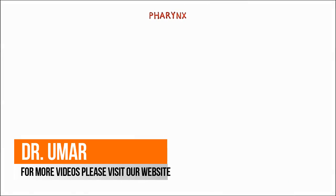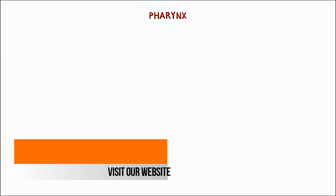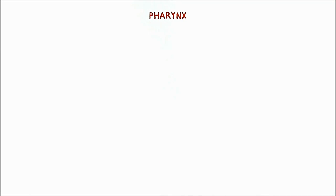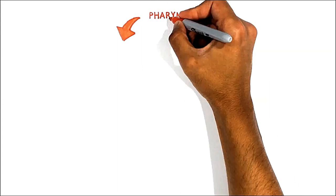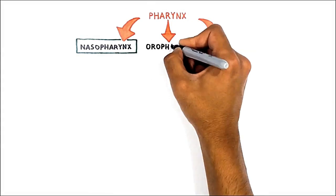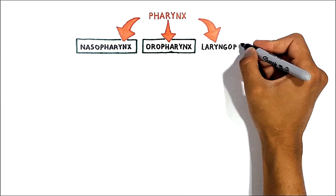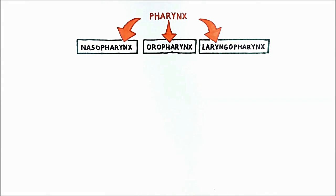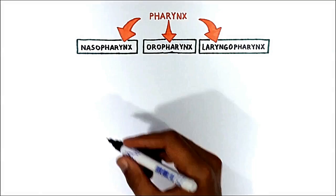The pharynx is a muscular tube that connects the nasal cavity and oral cavity to the larynx and esophagus. It is composed of skeletal muscle and lined by mucous membrane, dividing into three parts: the nasopharynx, the oropharynx, and the laryngopharynx. The nasopharynx functions only in respiration, but both the oropharynx and laryngopharynx have digestive as well as respiratory functions.